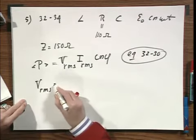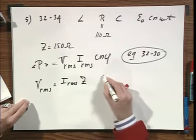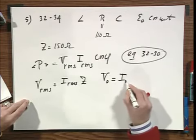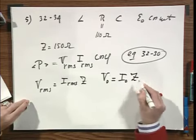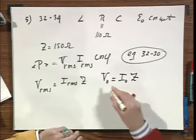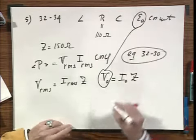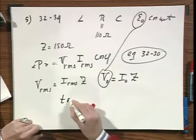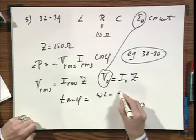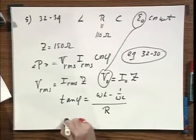Now, V RMS is obviously I RMS times Z for the simple reason that V zero equals I zero times Z. That's the way it is defined. This V zero, by the way, is that E zero. And the tangent of phi, which we have mentioned many times, is omega L minus one over omega C divided by R.